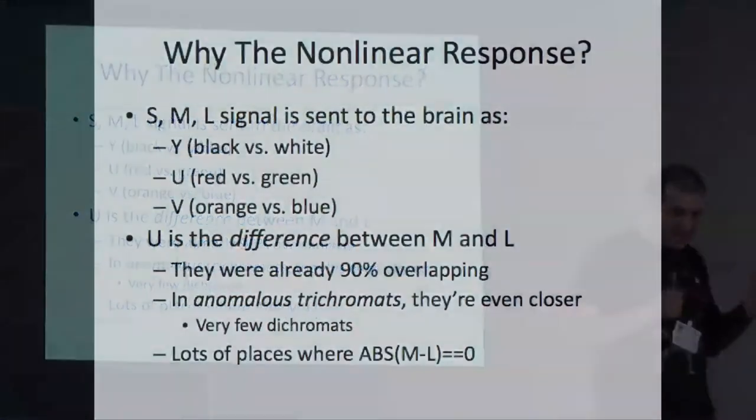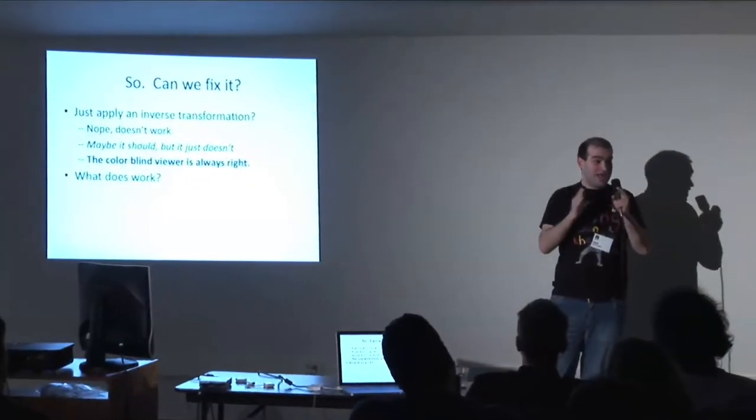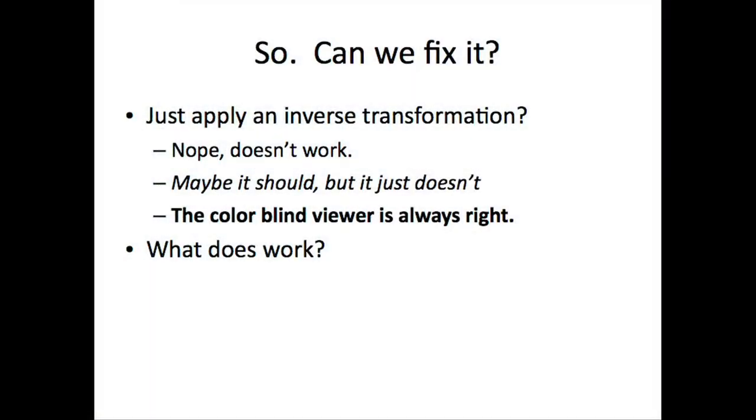So the nonlinear response actually comes from the fact that we are sending the difference between red and green to the brain. Well, if you're sending a difference and you are already at 90%, when the actual similarity in color blindness is at like 95%, 98%, red and green sensors are seeing about the same thing. So how do we fix it?